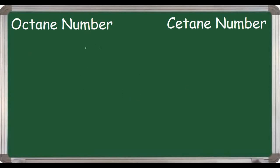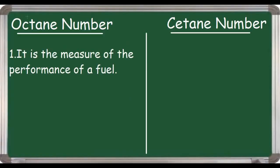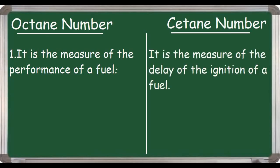So let's discuss the differences between octane number and cetane number. The first point: octane number is the measure of the performance of a fuel, and for cetane number, it is the measure of the delay of the ignition of a fuel.